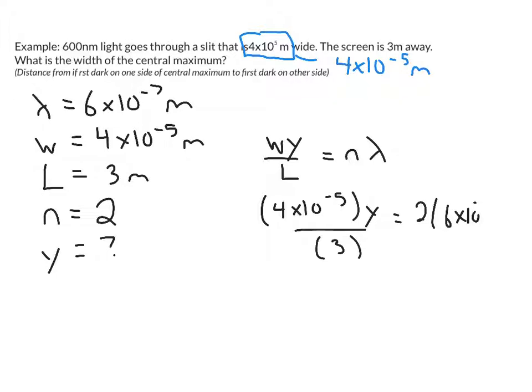I kind of ran out of room there, let's give it some more room: 2 times 6 times 10 to the negative 7. When we crunch all that out, we get a y value of 0.09 meters, or 9 centimeters.